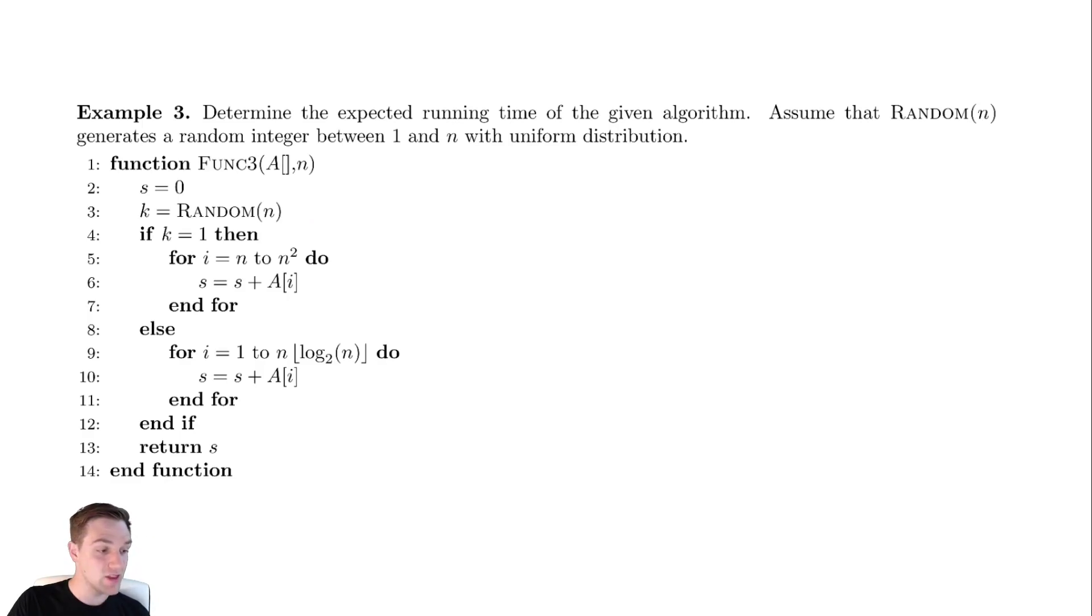Then depending on the value of that variable, whether it's one or anything else, we perform different operations. If it's one we do this first for loop that goes from n to n squared, and if it is anything else we do the second for loop, which is n log n.